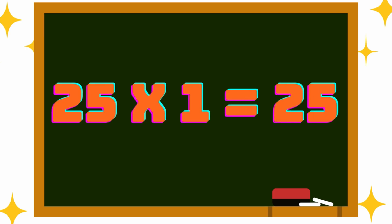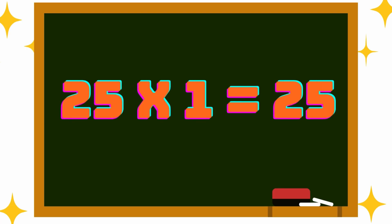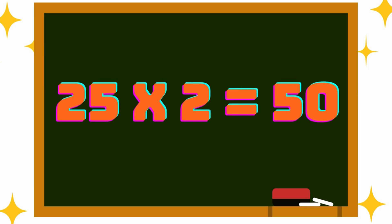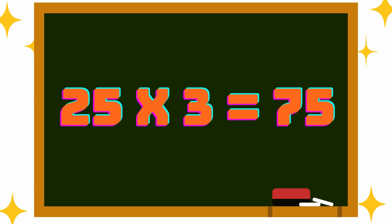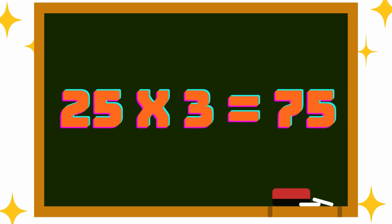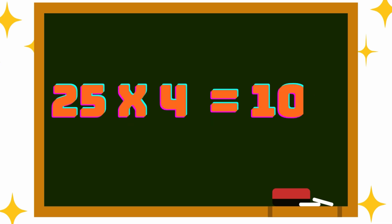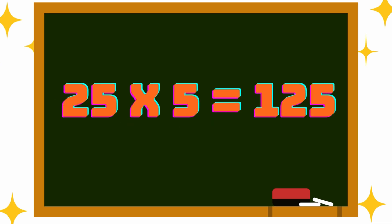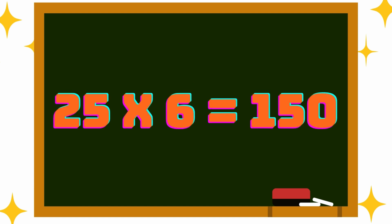25 into 1 is 25, 25 into 2 is 50, 25 into 3 is 75, 25 into 4 is 100, 25 into 5 is 125, 25 into 6 is 150.